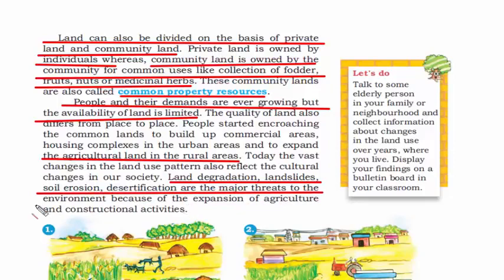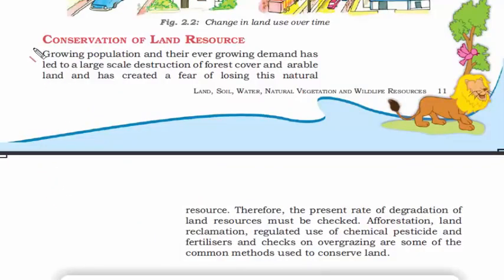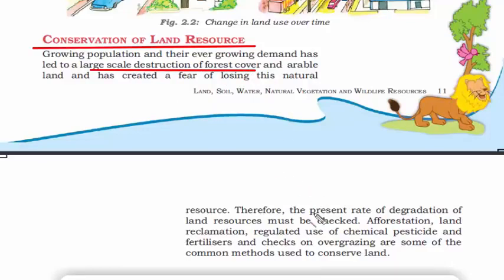Too much of everything is bad. We need construction activities and strong houses, but we also need land for agriculture to feed the large growing population. Yet doing so can cause huge land degradation, landslides, and soil erosion, which are very catastrophic. We need to balance both. It is our duty to conserve land resources, and there must be an authority that keeps a check on how much land is being used versus what is left for forest conservation.